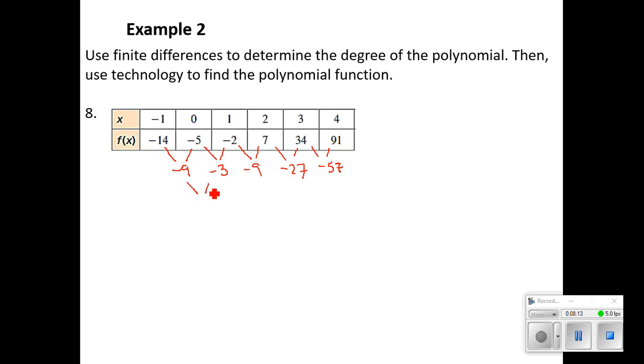Now for our second difference, because those did not come out to be constant, we're going to check our next difference. -9 minus -3. -3 minus -9. -9 minus -27. And -27 minus -57.